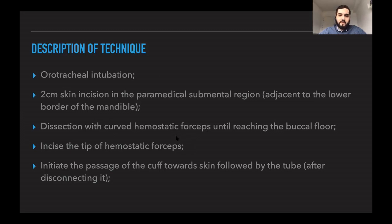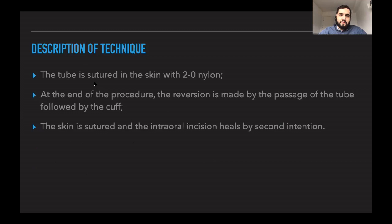Once we reach the floor of the mouth, we incise with the tip of the hemostatic forceps. Then we initiate the passage of the curve through the skin, followed by the tube after disconnecting it — first the curve, then the tube. After that, the tube is sutured to the skin with 2-0 nylon. For reversal, the tube is passed back followed by the curve; the skin is then sutured and the intraoral incision heals by secondary intention without suturing.